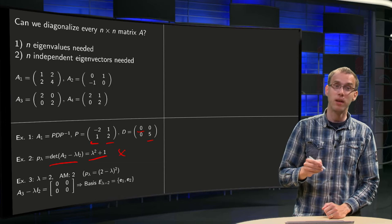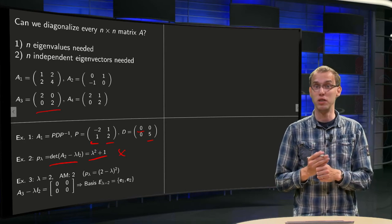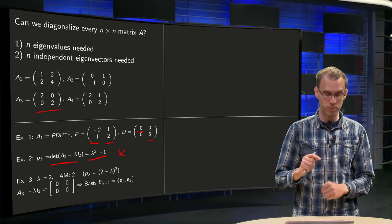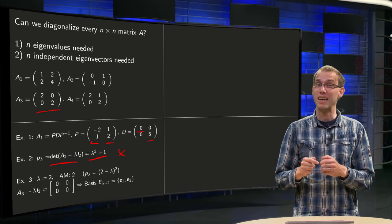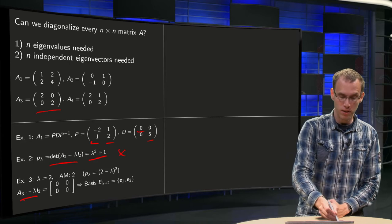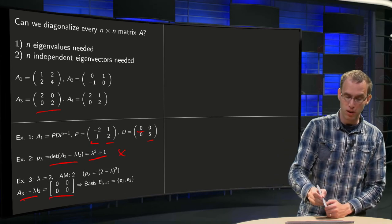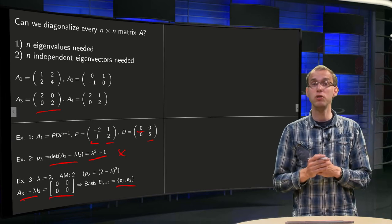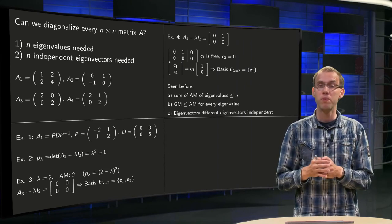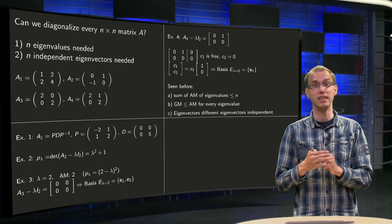Let's continue with matrix A3. There we see λ = 2 is the only eigenvalue with algebraic multiplicity 2, as seen from the characteristic polynomial. So we have two real eigenvalues: 2 and 2. Now, do we have enough independent eigenvectors? We compute A3 minus λ times I2, which is a zero matrix, so we find the null space of this matrix. The basis of this null space is just E1 and E2, so we have two independent eigenvectors, and this matrix A3 is diagonalizable.